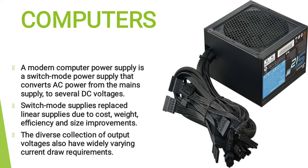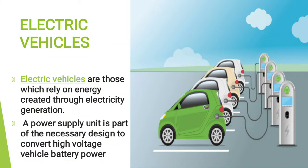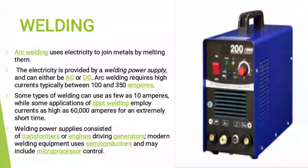Electric vehicles are those which rely on energy created through electricity generation. Arc welding uses electricity to join metals by melting them; the electricity is provided by a welding power supply and can be either AC or DC. Some types of welding can use as few as 10 amperes, while some applications of spot welding employ currents as high as 60,000 amperes for an extremely short time.